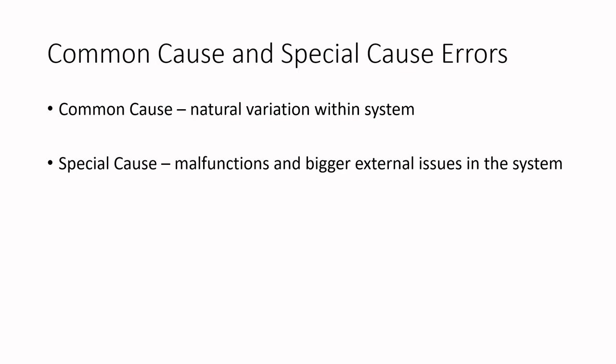Now Deming said that around 94% of error that occurred within systems was caused by common cause, and around 6% was special cause. They use the example of projects often being late, but are they late because of big huge things like global pandemics or hurricanes and so on? These are special cause errors that are causing delays within the progress of a project.